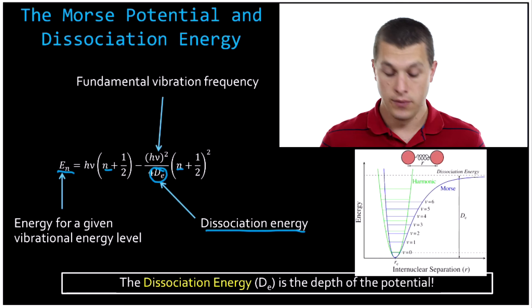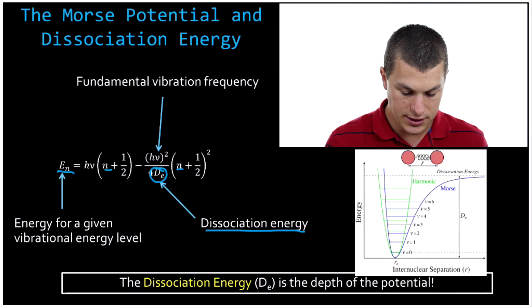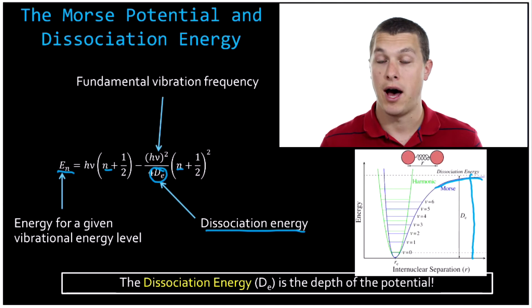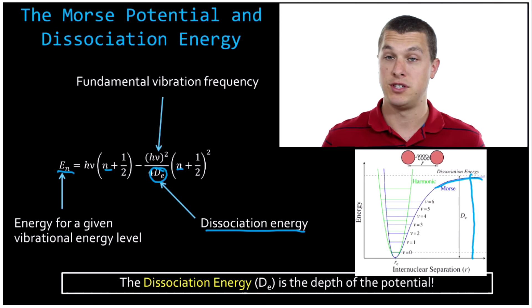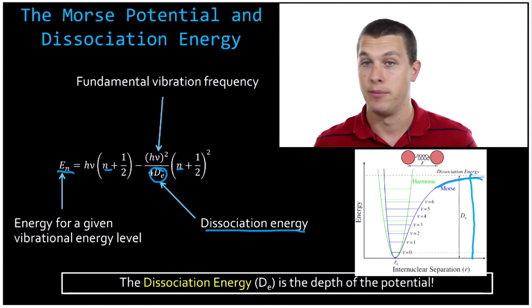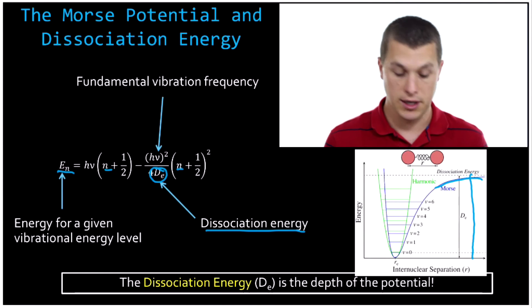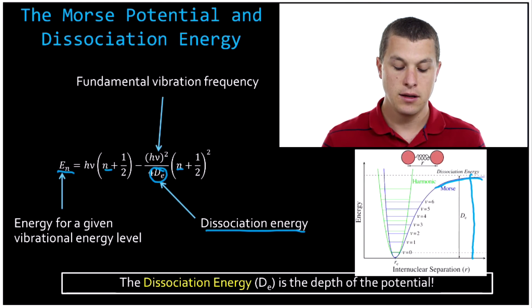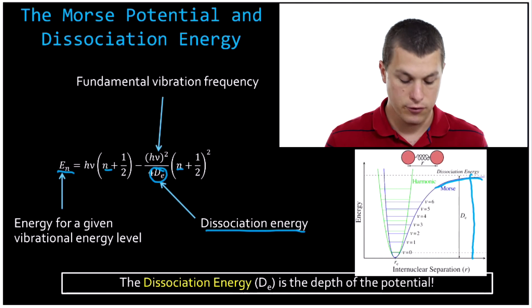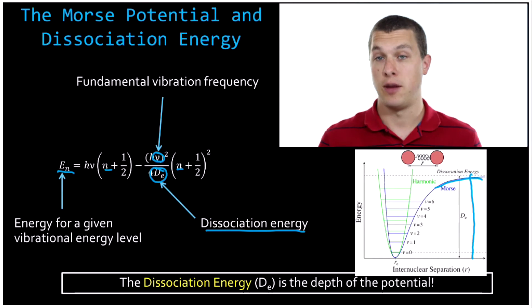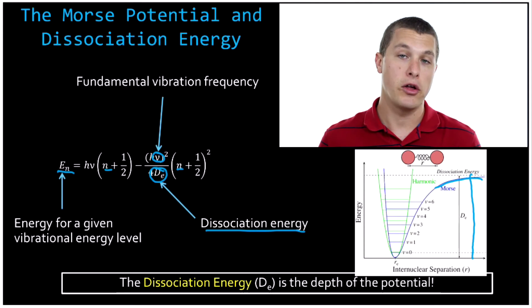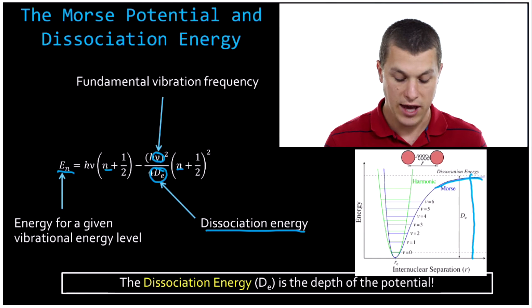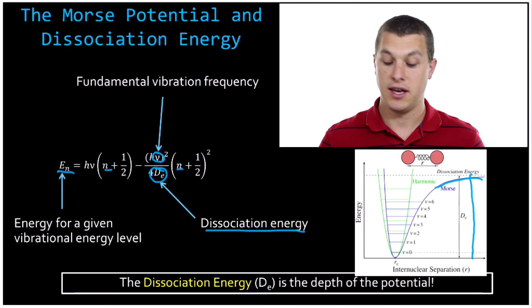The dissociation energy is basically how deep your well is. On the graph, dE is represented from the top of the well all the way down to the bottom — the trough of that potential. You can think of the dissociation energy as the amount of energy it would take to take something from the very bottom of the trough to the very top, which physically corresponds to separating your two atoms, or dissociating them. To calculate the energy of the different states, you pick which state you want and plug it into the equation. You also need Planck's constant, which is always the same for all molecules, and the fundamental vibration frequency — the frequency of oscillation of your molecule in its lowest state.